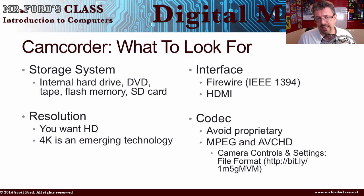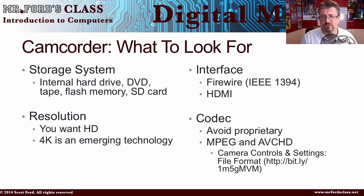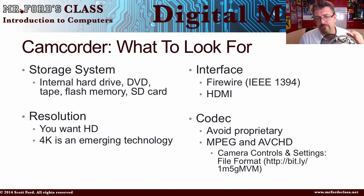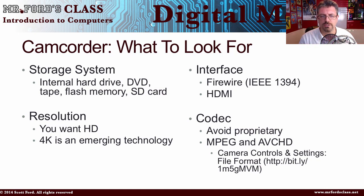As for resolution, you want to shoot HD — not SD. As I'm recording this, 4K is an emerging technology; we'll see how that turns out. For interface — how your camera connects to a computer — options include IEEE FireWire 1394, HDMI, and USB. I would go with HDMI or FireWire. For codecs — how the camcorder saves the file — avoid proprietary formats. I had a camcorder that shot gorgeous video but used a proprietary format that kept messing up on my computer, and there's nothing more frustrating than recording 20-30 minutes of footage only to have to re-record it.